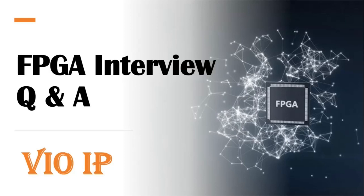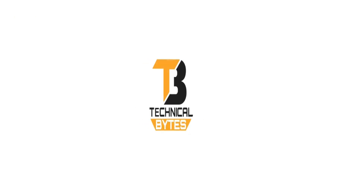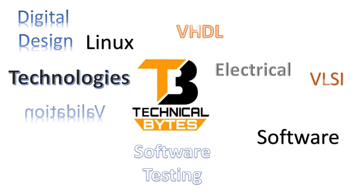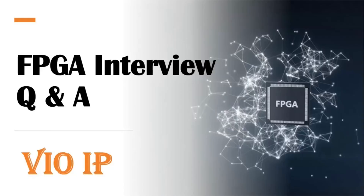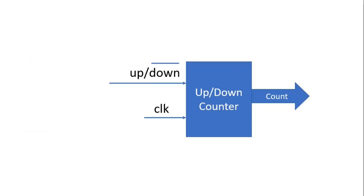Now without wasting much time, let us see what is inside this video. On your screen you are seeing a problem statement where we have an up-down counter. It has clock as an input, count as an output, and apart from these two signals we have one more input signal that is called the up-down signal. It selects the up mode or down mode of this counter.